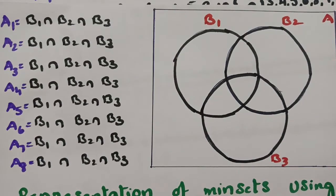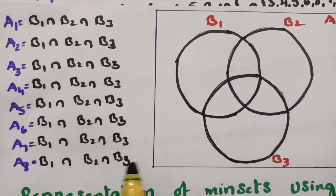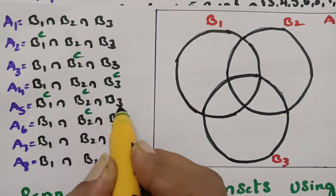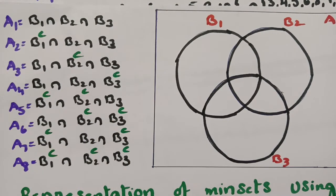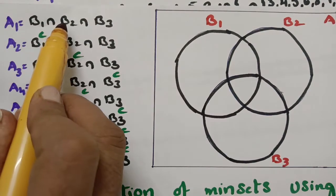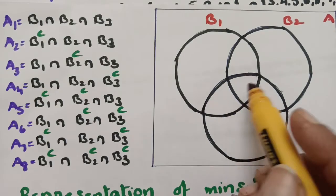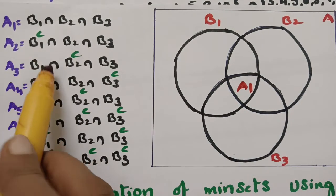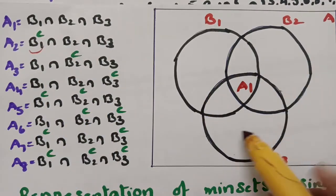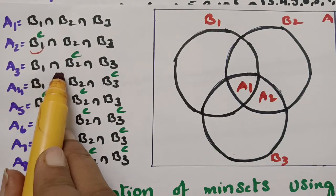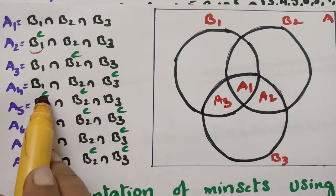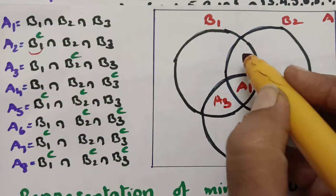Now, how to represent these MinSets using a Venn diagram. A1 = B1 ∩ B2 ∩ B3 is the central intersection part of all three circles — write A1 there. A2 corresponds to B2 ∩ B3 (excluding B1), write A2 there. A3 corresponds to B1 ∩ B3 (excluding B2), write A3 there. A4 corresponds to B1 ∩ B2 (excluding B3), write A4 there.